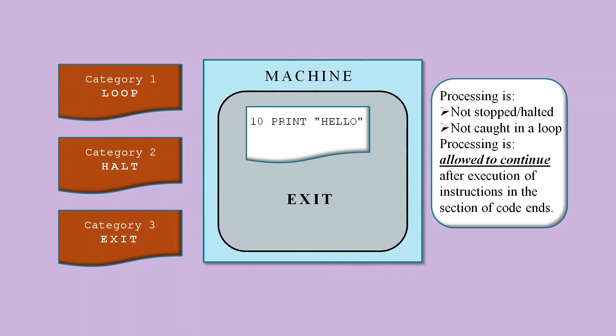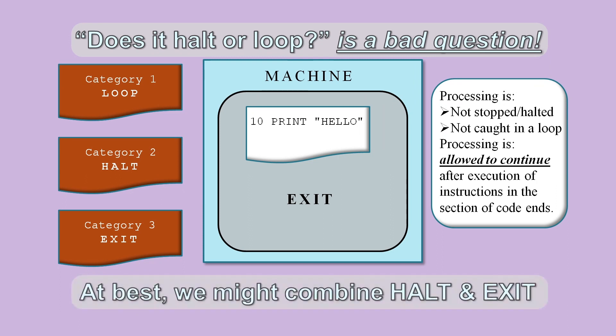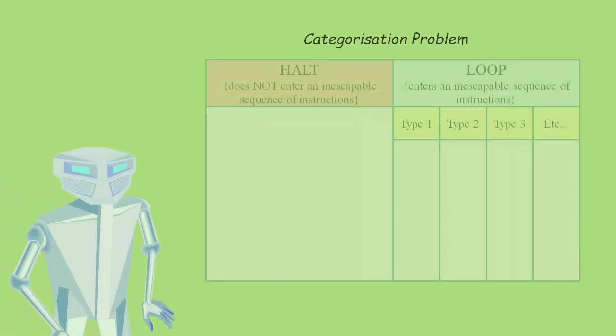If we've got three categories instead of two, the question does it halt or loop could be considered to be misleading. If we were being generous we might consider that the term halt refers to all states apart from the loop state, so it could include both categories stop the machine as well as exit the code. So we might describe the halting problem as a problem about categorization.